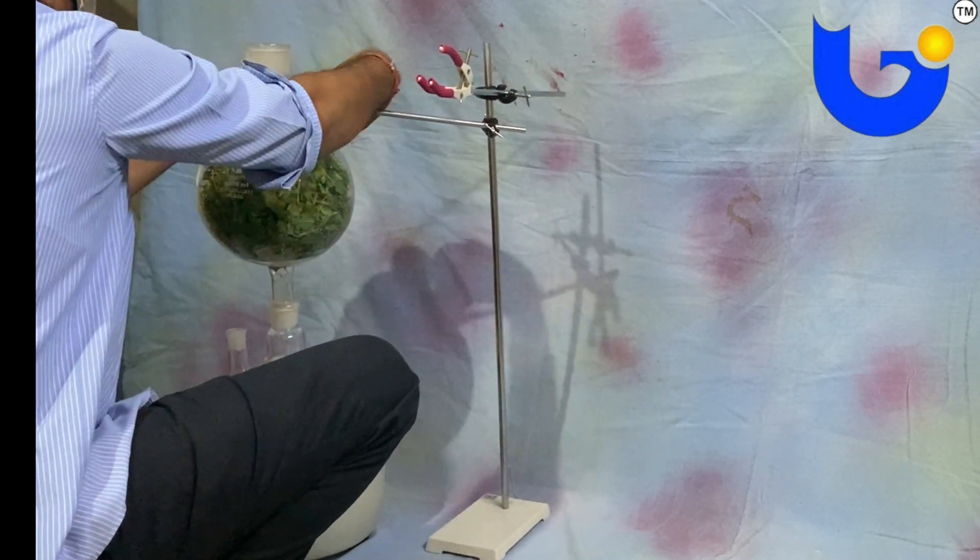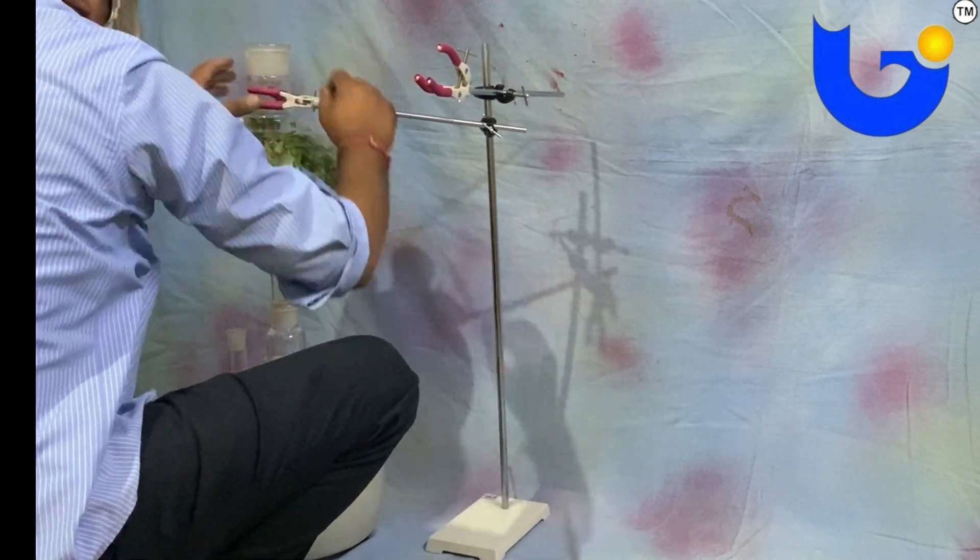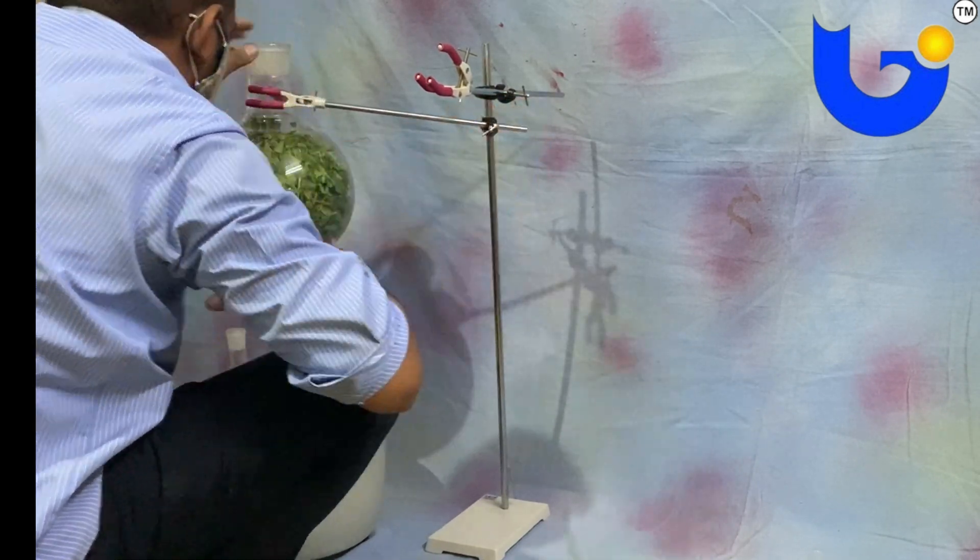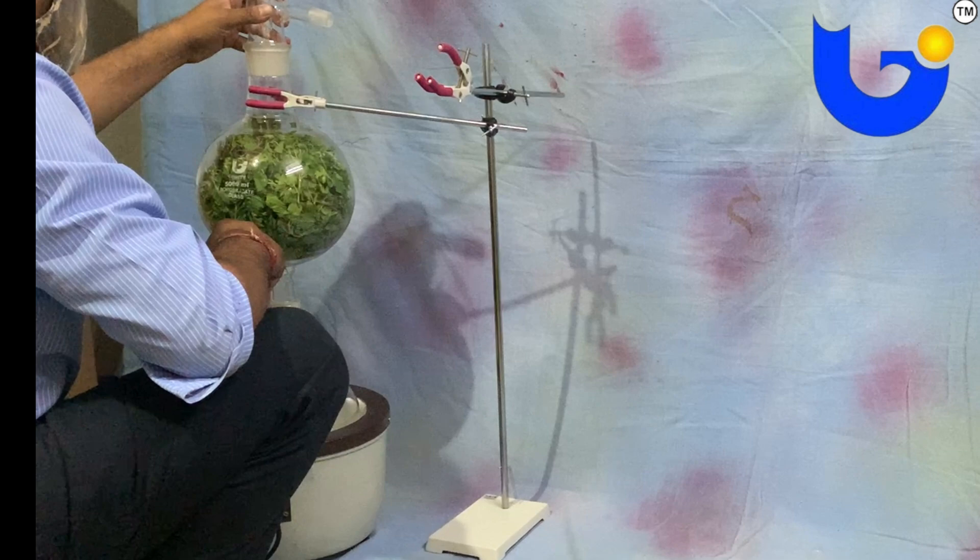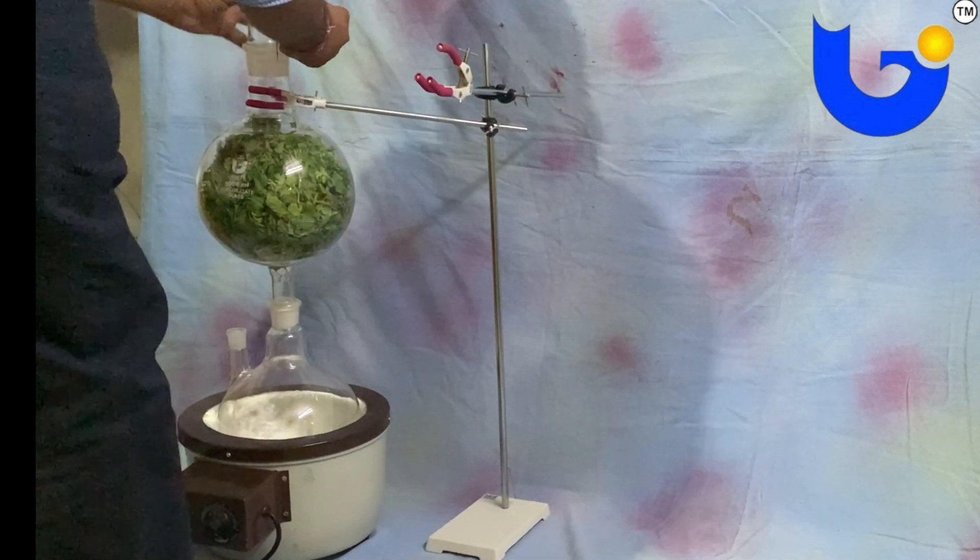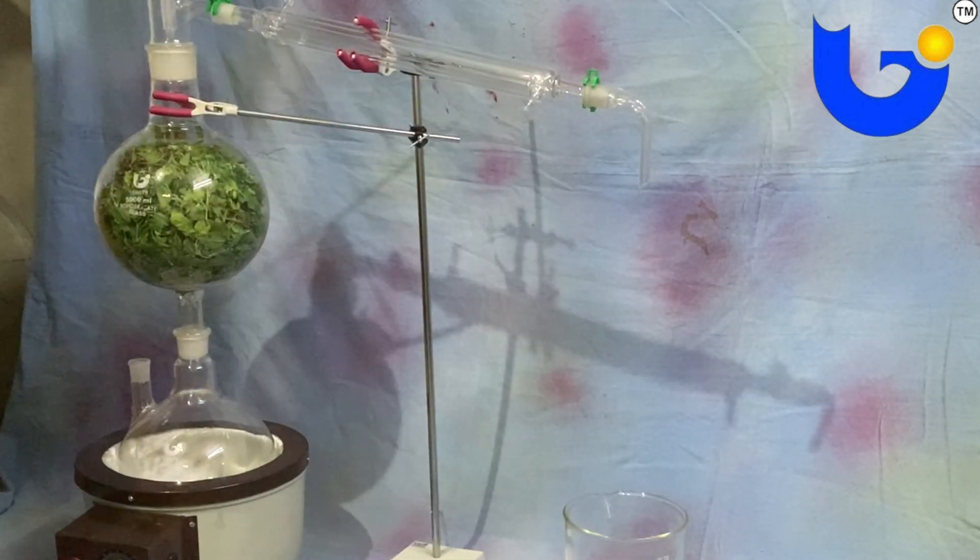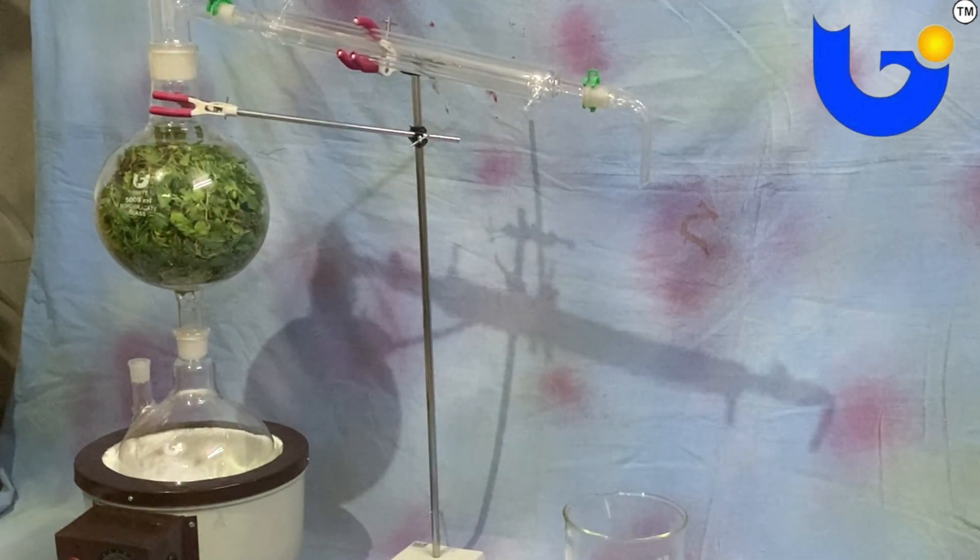So now the question is what is essential oil? Essential oil is concentrated liquid containing volatile compounds from plants. An essential oil is essential in the sense that it contains the essence of the plant's fragrance, the characteristic fragrance of the plant from which it is derived.